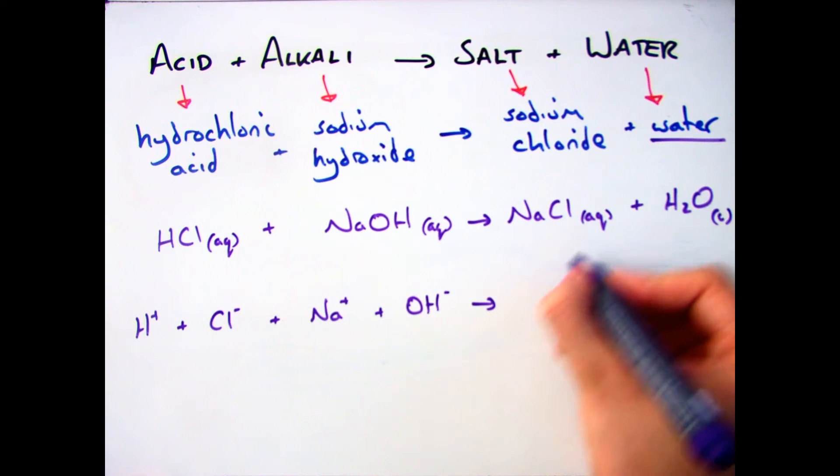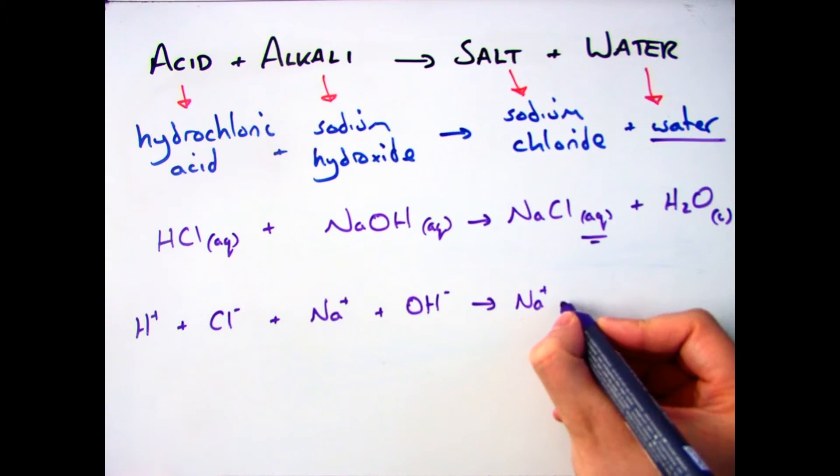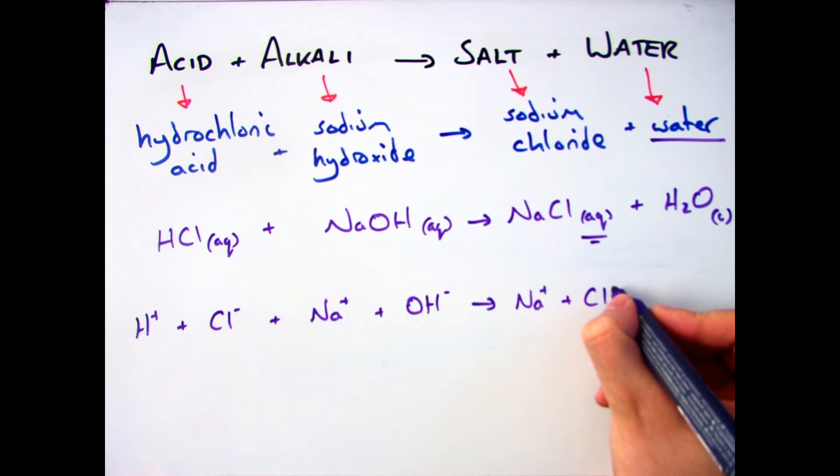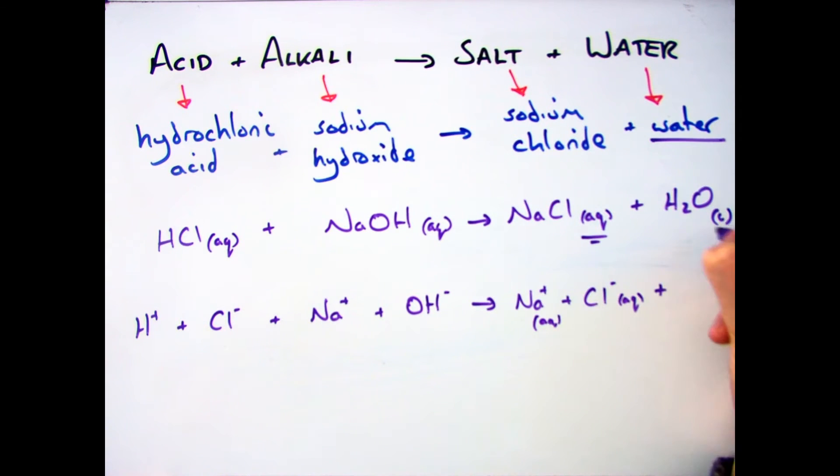And then you can put the ions in again. Now remember, you only put the ions down for something that has dissociated. So in this case, it's my Na plus and Cl minus. Water is a liquid, it's not dissociated, so you just put H2O, which is the liquid in there. So my ionic equation will look like this.